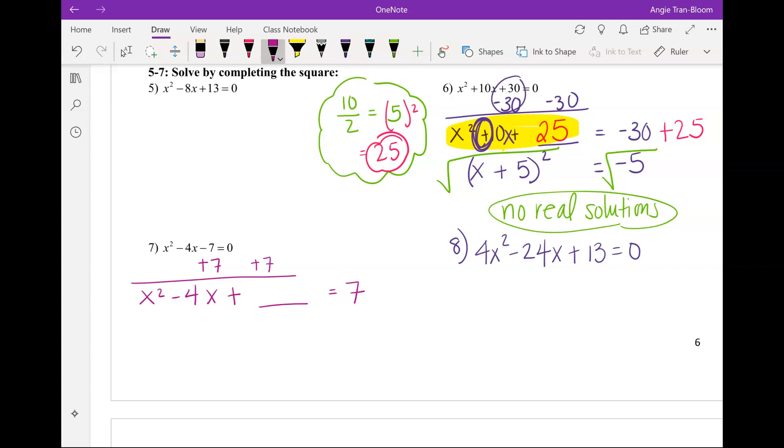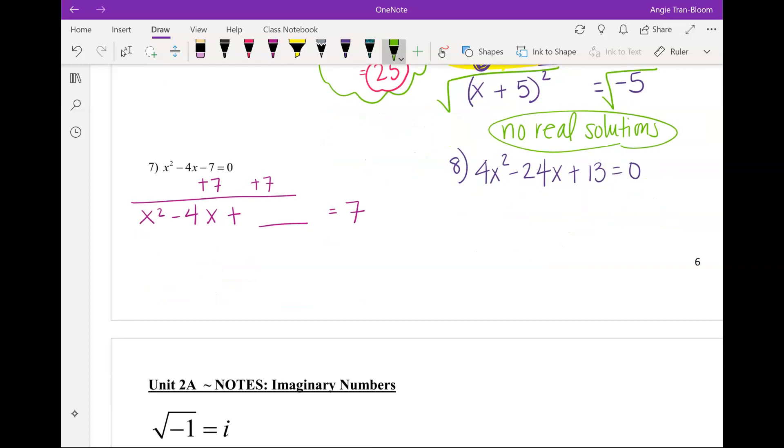Side work. Emily, side work. What do we take and what do we divide? Divide negative 4 by 2. Perfect. Take your negative 4 divided by 2. Negative 4 divided by 2 is what, Chris? Negative 2. And we're going to square it, Chris. What's negative 2 squared? 4. We're going to take that. We're going to add it to the left. We must also add it to the right. I think this is what Trevor got 11 from.